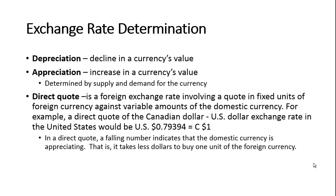In a direct quote, a falling number indicates that the domestic currency is appreciating — that is, it takes fewer dollars to buy one unit of the foreign currency. In this quote it takes a little more than 79 cents to buy one Canadian dollar. If the exchange rate fell to say .65, it would only take 65 cents to buy one Canadian dollar, meaning the US dollar is appreciating and the Canadian dollar is depreciating.